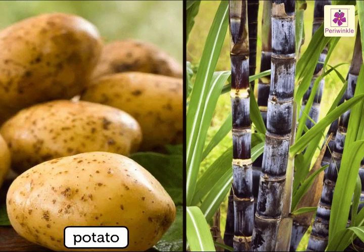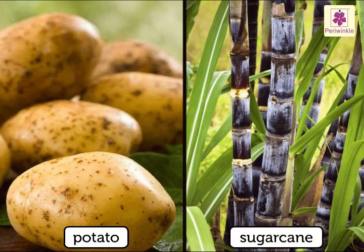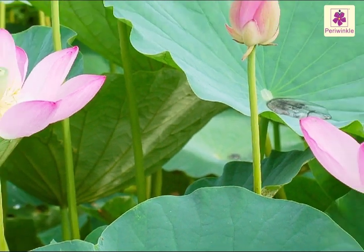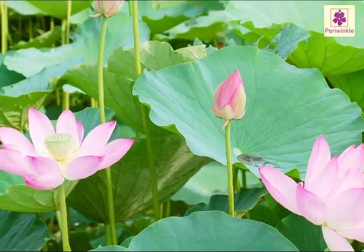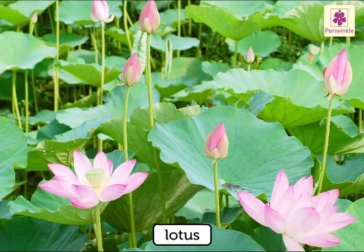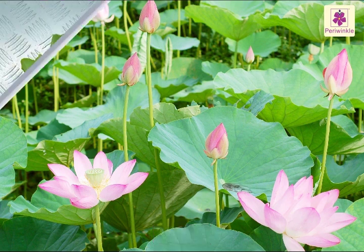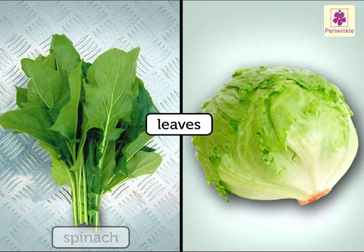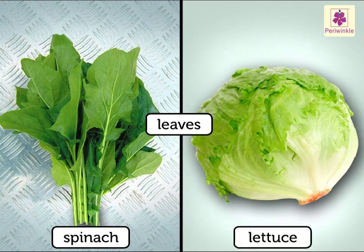Potato and sugarcane are stems. We also eat the stem of the lotus plant. We eat the leaves of spinach and lettuce plants.